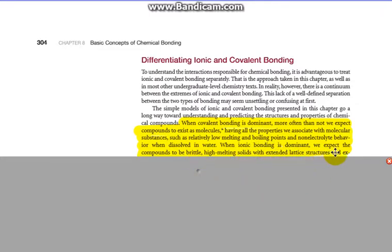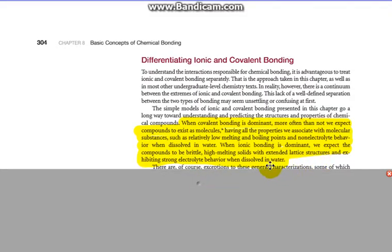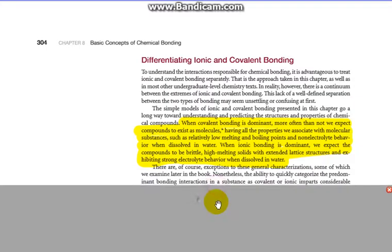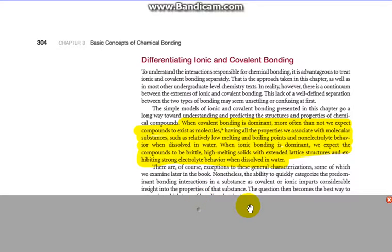When ionic bonding is dominant, we expect the compounds to be very brittle, have high melting solids with extended lattice structures, and exhibiting strong electrolyte behavior because they can get dissolved in water and complete that circuit. There are of course exceptions to these general characterizations, some of which we examine later.